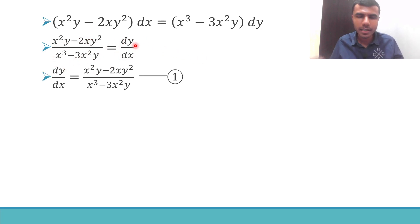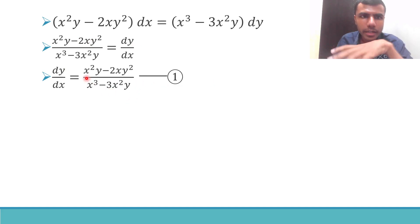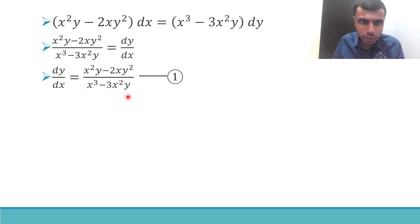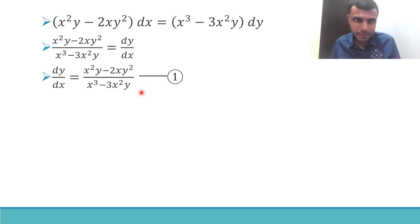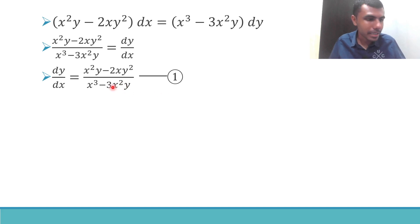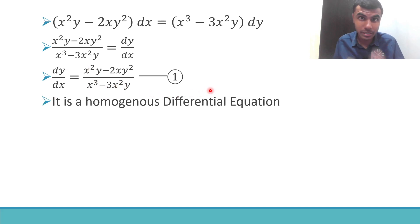If you observe the numerator, it is a homogeneous function of degree 3, and if you observe the denominator it is also a homogeneous function with the same degree — degree 3. Whenever we have dy/dx equal to a homogeneous function divided by a homogeneous function of the same degree, this becomes a homogeneous differential equation.